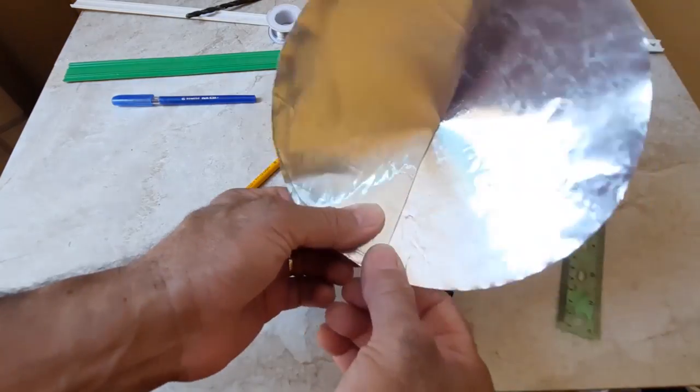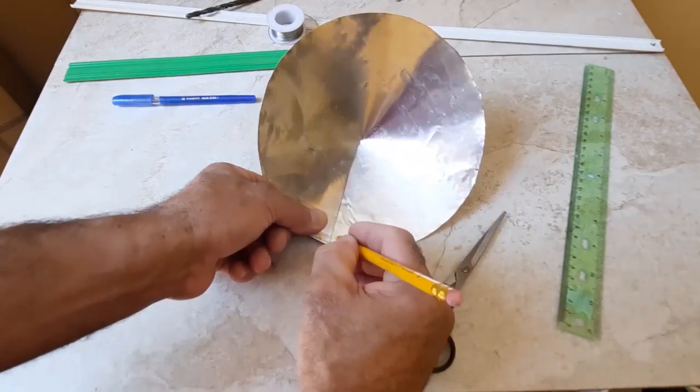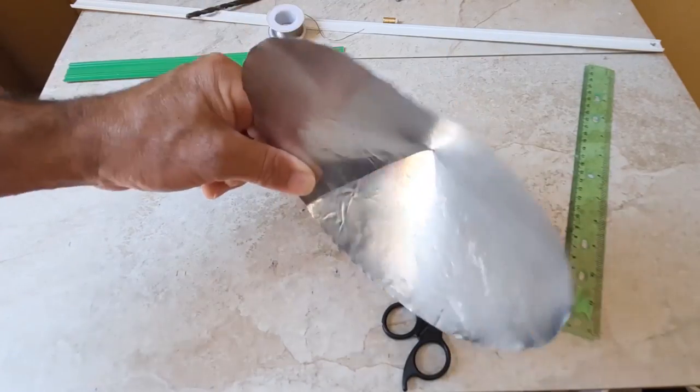Finally, so that it has parabolic shapes, you only have to paste both marked faces up to the drawn lines.